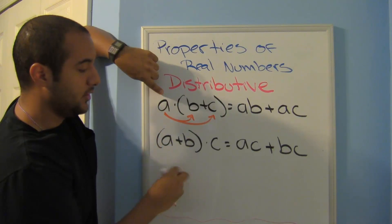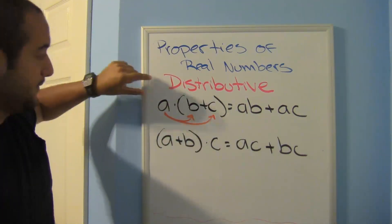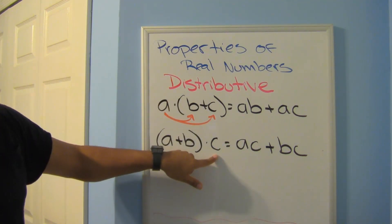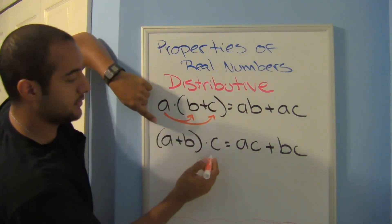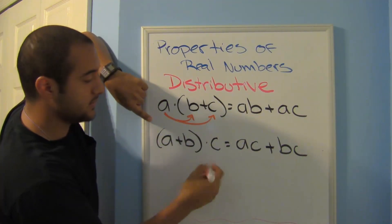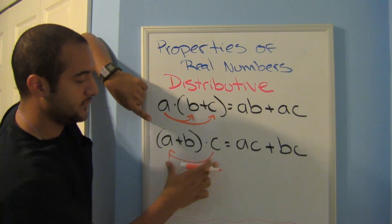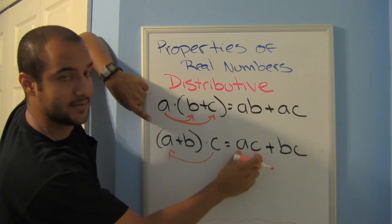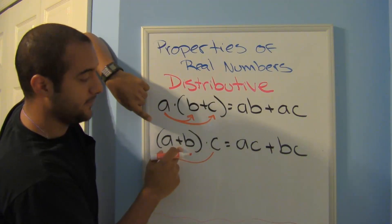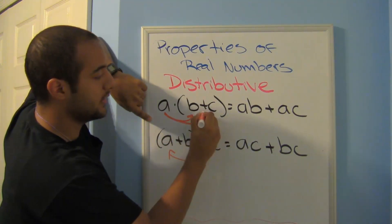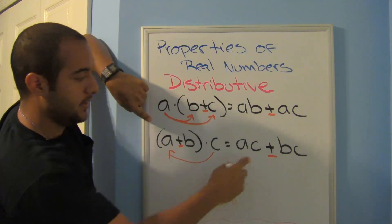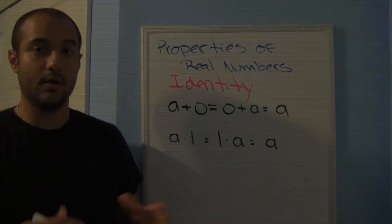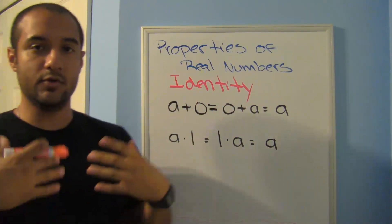Sometimes the first element is written at the back instead of the front, but it means the same thing: (b plus c) times a equals b times a plus c times a. Just pay attention to whatever form they give you. This can also be subtraction, so you can have a times (b minus c) equals ab minus ac.